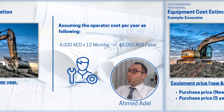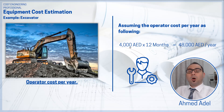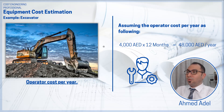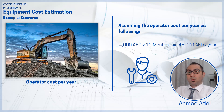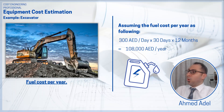The second criterion is the operator cost per year. This equipment needs an operator to drive it. I'll assume the operator costs 4,000 dirhams per month, multiplied by 12 months, giving an operator cost of 48,000 dirhams per year. There's a linked video in the description about labor cost estimation that explains how we arrive at that 4,000 figure based on labor category.